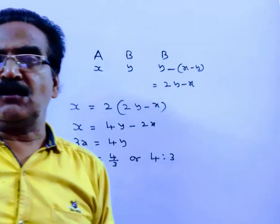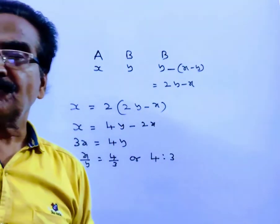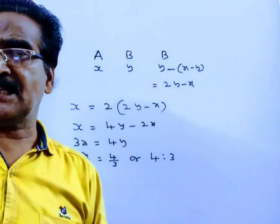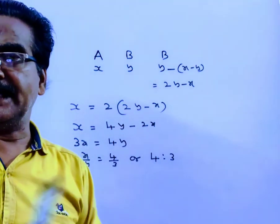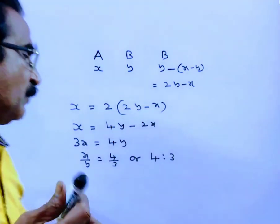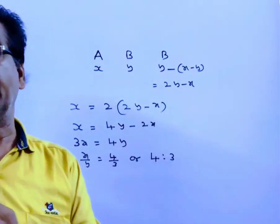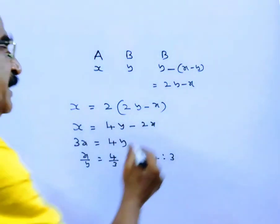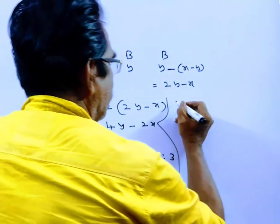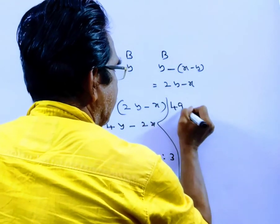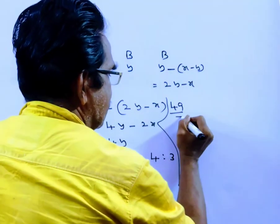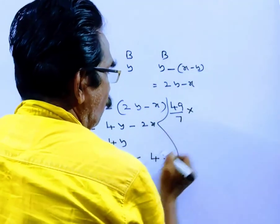So X to Y equals 4 to 3. Now, the sum of the ages of A and B is given as 49. Let us divide 49 in the ratio of 4 to 3 to get the ages of A and B. So 49 by (4 plus 3) is 7 into 4.